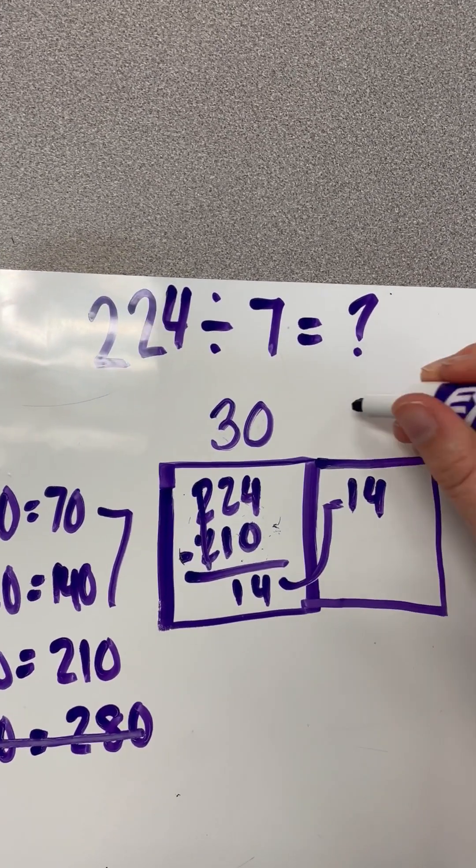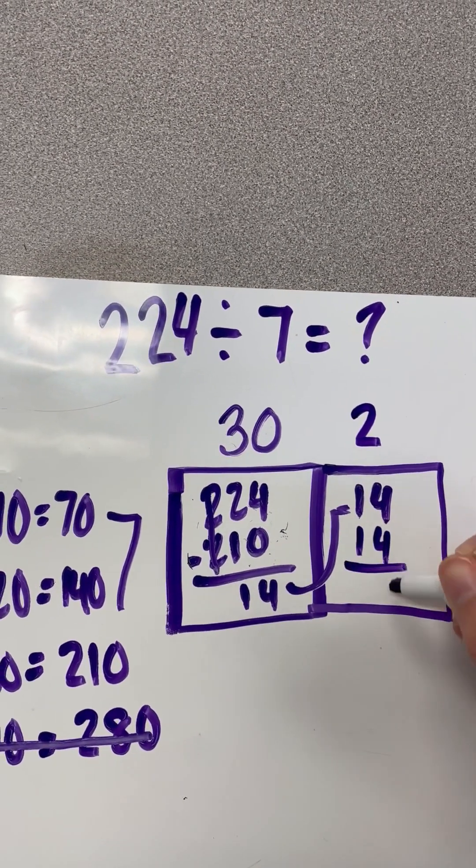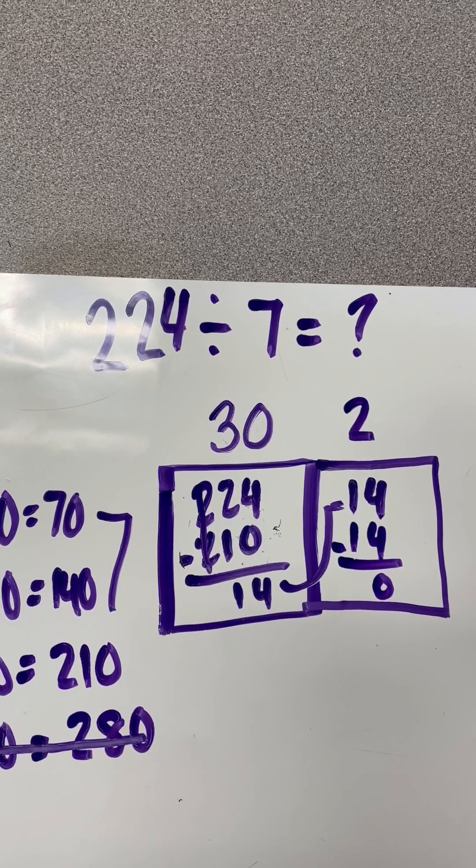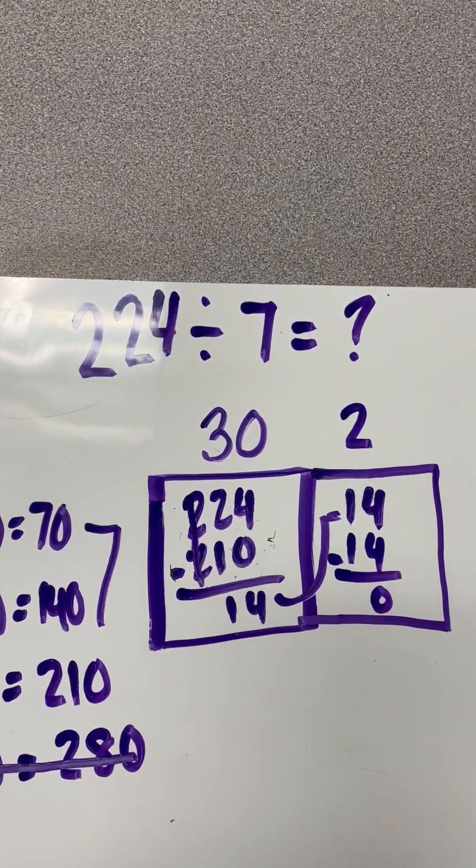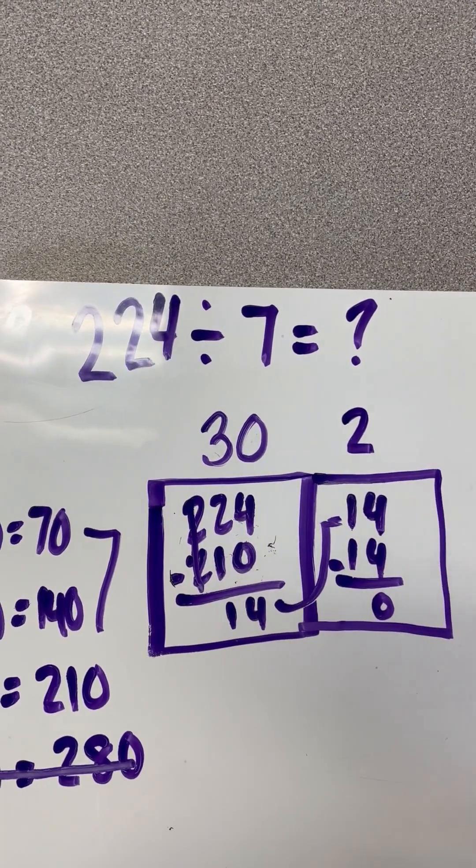Well, we can do 7 times 2 and get 14 exactly and have 0 left over. And that means I've used the complete 224, and that means I have finally come to my answer. But I'm not complete yet.